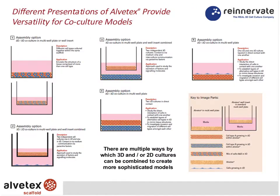Albatex can be used for co-culture in various scenarios. In scenario one, two cell types are mixed and seeded simultaneously into Albatex in 3D. In scenario two, 3D cells in the insert can signal to 2D cells on the base of a conventional plate. Scenario three has 3D-to-3D signalling. In scenario four, two disks of Albatex are put together to study signalling. We can also recreate layers of different cell types to resemble layers within organ structure.